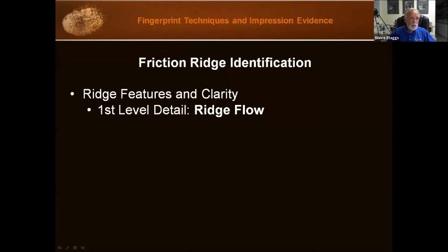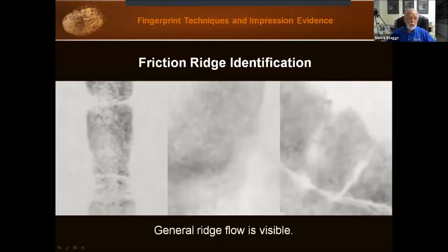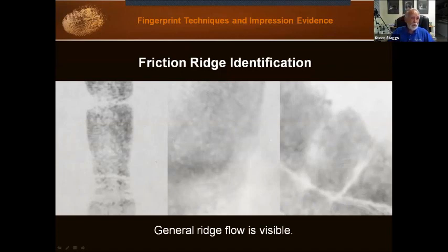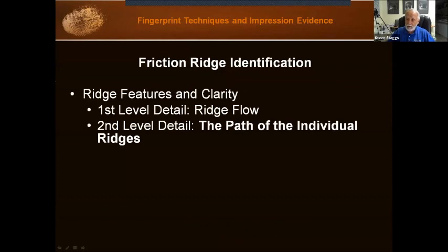The perceived general direction of ridge flow is not to be considered unique — there can be many prints that share the same general direction. Looking at three prints with the ridge flow slightly out of focus, we ask: is the ridge flow similar between the unknown print and the known? If the ridge flow is not similar, you move on. That's first level detail. If the ridge flow is similar, you proceed to second level detail.